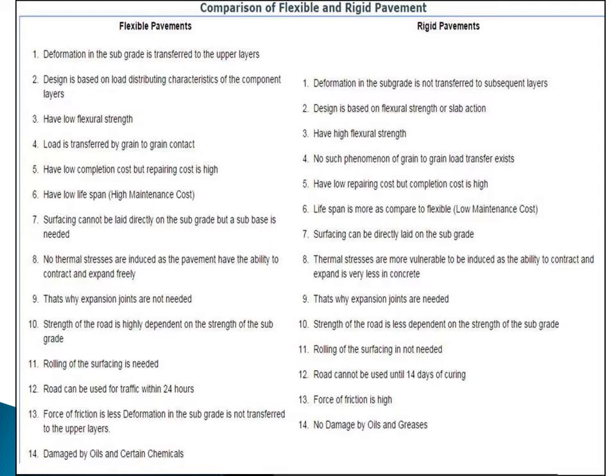The fourth point: flexible pavements have low construction cost but repair cost is very high. The cost of bituminous binding material is relatively less compared to cement used in rigid pavement, so the initial construction cost is less for flexible pavement. However, repair cost is very high as it demands frequent maintenance. Whereas rigid pavements have low repair cost but high initial construction cost.